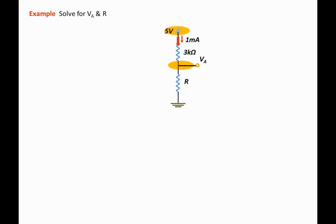So we can state that Va will equal the voltage at the top, which is 5 volts, minus the voltage drop, that is 1 milliamp times 3 kilo ohms. The answer is 2 volts.